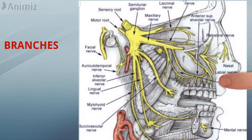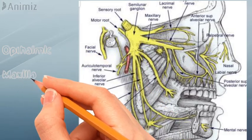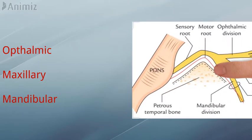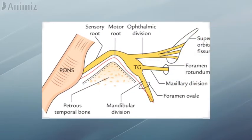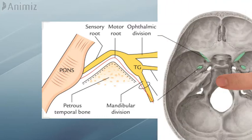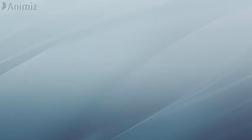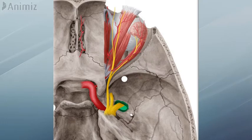From the ganglion, three branches arise: ophthalmic, maxillary, and mandibular. These three branches pass through separate foramina to leave the cranial cavity. The ophthalmic nerve passes through the superior orbital fissure, the maxillary through the foramen rotundum, and the mandibular through the foramen ovale. The motor root of the trigeminal nerve also passes through the foramen ovale with the mandibular division.